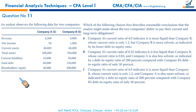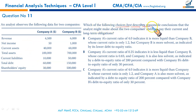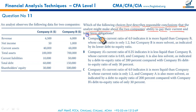Next: an analyst observes data for companies A and B including revenue, current assets, total assets, liabilities, debt, and equity. The question asks which best describes reasonable conclusions about these two companies' ability to pay current and long-term obligations. Ability to pay current obligations is measured through current ratio, quick ratio, and cash ratio; ability to pay long-term debt is measured through debt ratio, debt-to-capital, and debt-to-equity.